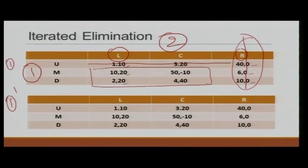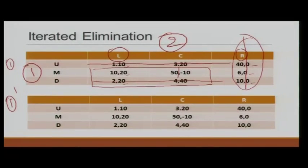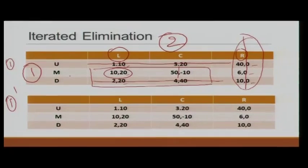In this further reduced game, M strictly dominates D, so we can remove D as well. Continuing the process, we now have only one strategy for player 1 and two strategies for player 2, and since L strictly dominates C, we can remove C. The outcome is M, L. Even if you had used Nash Equilibrium, this would be the outcome. This is another technique to find equilibrium in some games, using Iterated Elimination of Strictly Dominated Strategies.